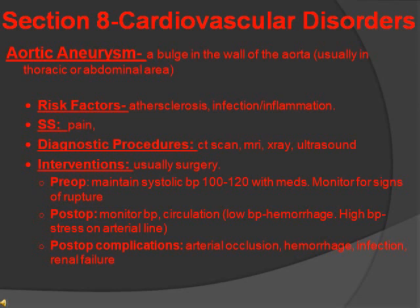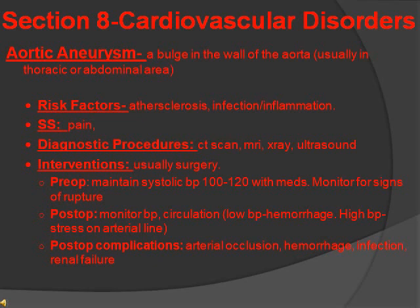Aortic aneurysm is a bulge in the wall of the aorta, usually in the thoracic or abdominal area. Risk factors include atherosclerosis, infection, and inflammation. It's usually asymptomatic, but pain may be present. Diagnosed by CAT scan, MRI, or X-ray/ultrasound. Intervention is usually surgery. Pre-op: maintain systolic blood pressure within 100 to 120 with medication, and monitor for signs of rupture. Post-op: monitor blood pressure and circulation; low BP may indicate hemorrhage, high BP may indicate stress on the arterial line. Complications include arterial occlusion, hemorrhage, infection, and renal failure.